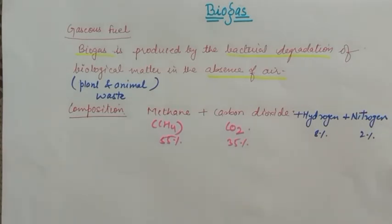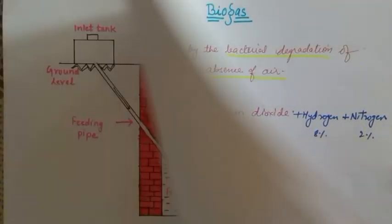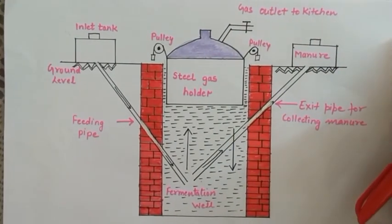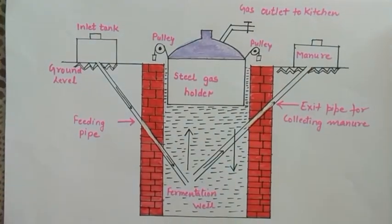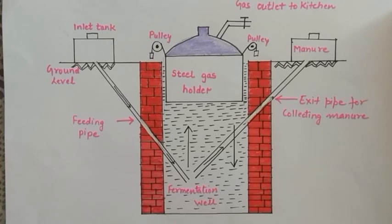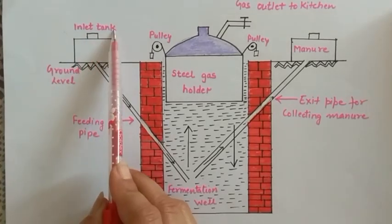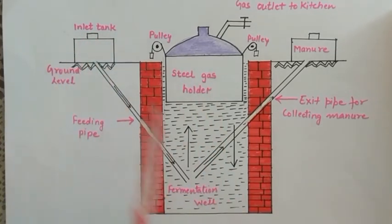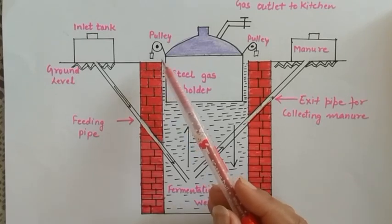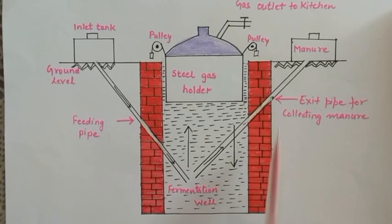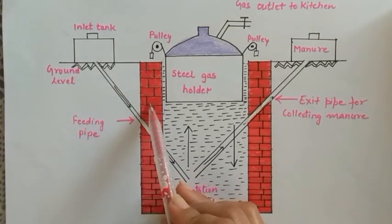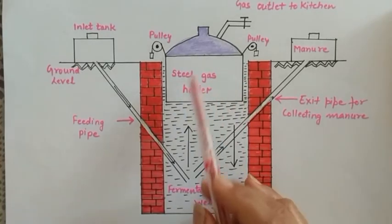Now we are going to study in depth the manufacturing and working of biogas. Here is the diagram of the biogas plant — a plant for the manufacture of biogas. This is the inlet tank, which is made underground. Then there is a cylindrical tank made of bricks, and this is a steel gas holder made of steel sheets.